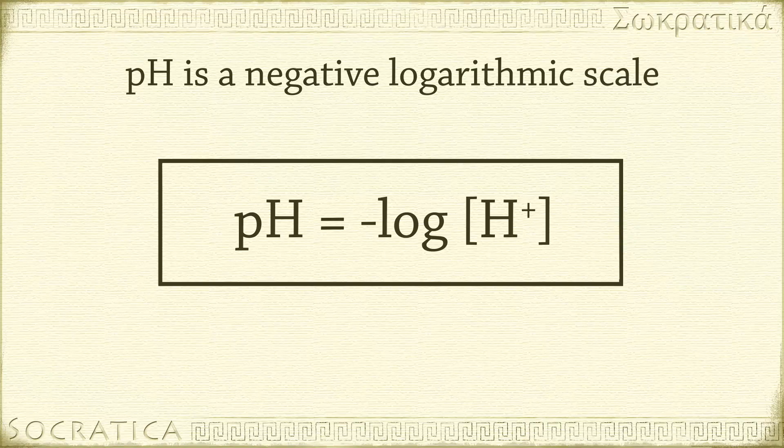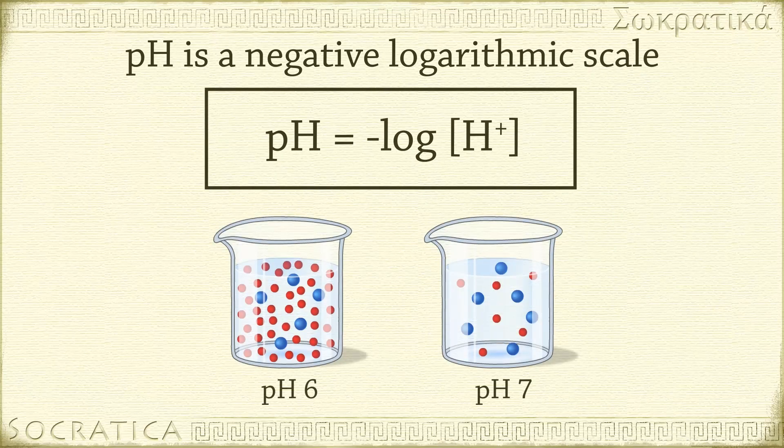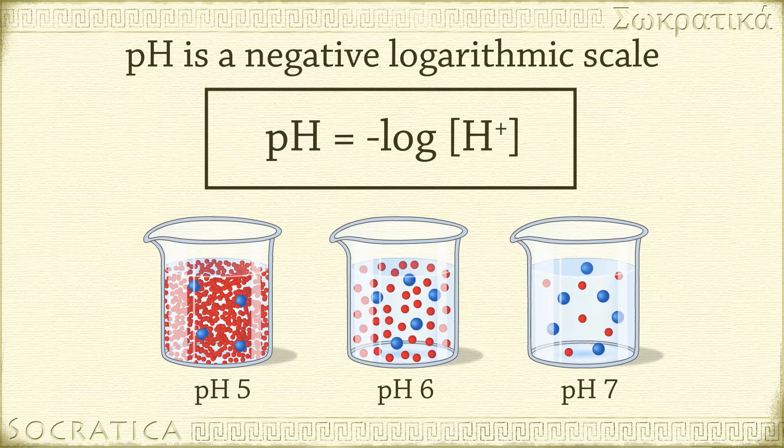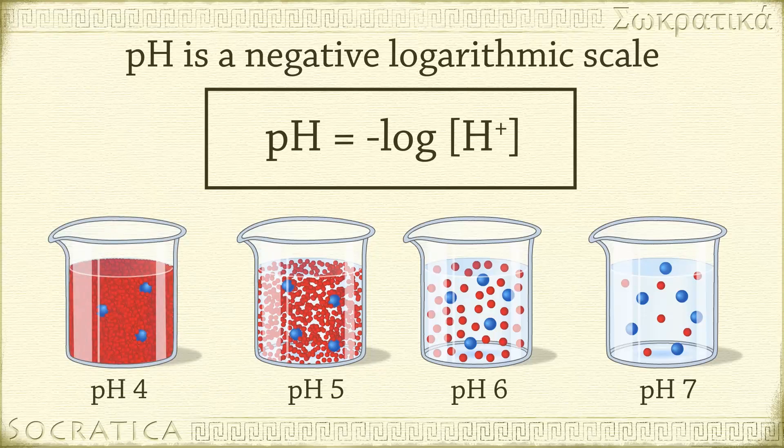And because the scale is log-based 10, each difference in pH represents a 10-fold difference in the concentration of H+ ions. A substance with pH 6 has 10 times more hydrogen ions than water has with a pH of 7. A substance with pH 5 has 100 times more H+ ions than pH 7. pH 4 has 1000 times more H+ ions, and so on.